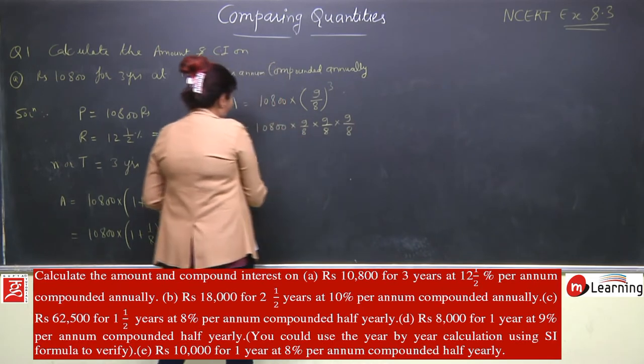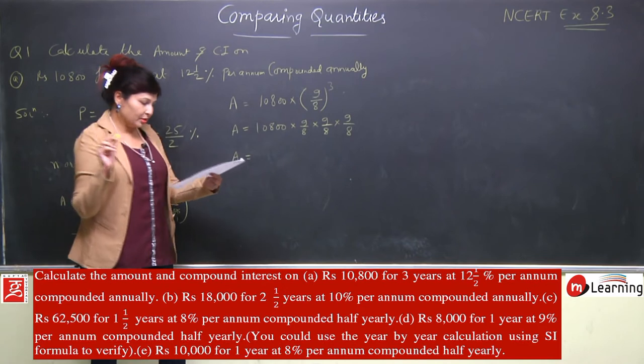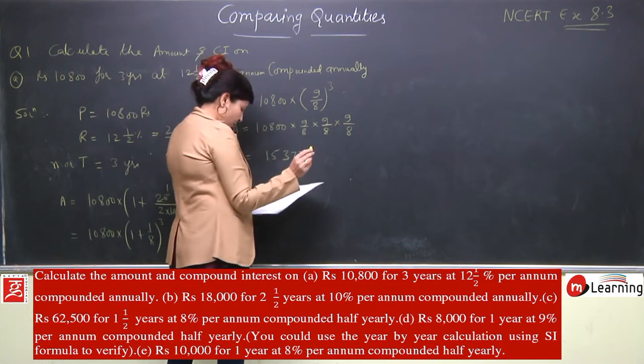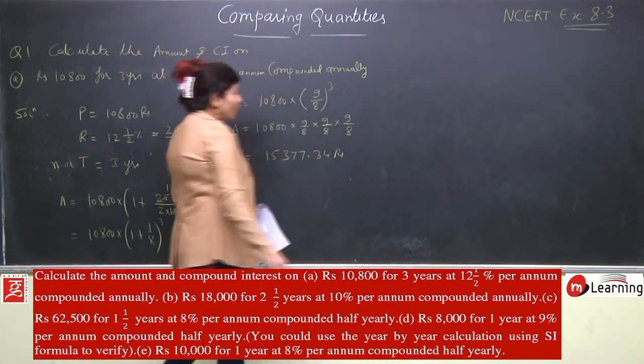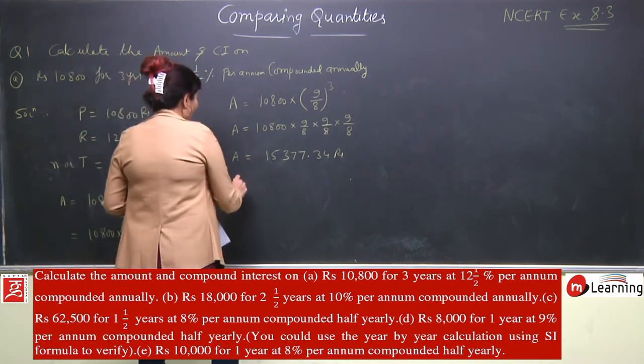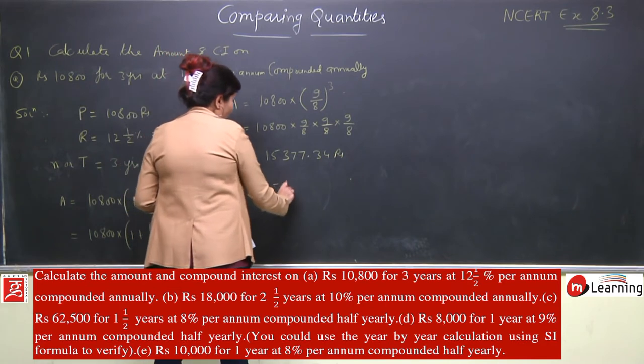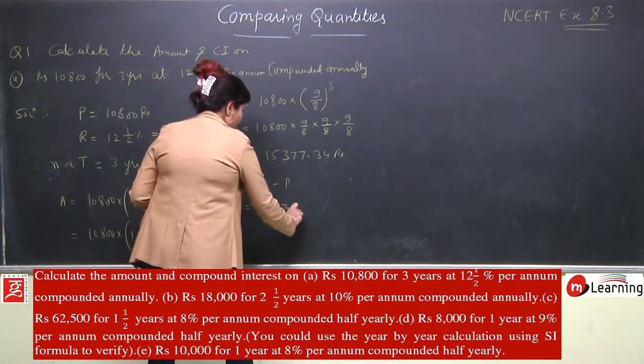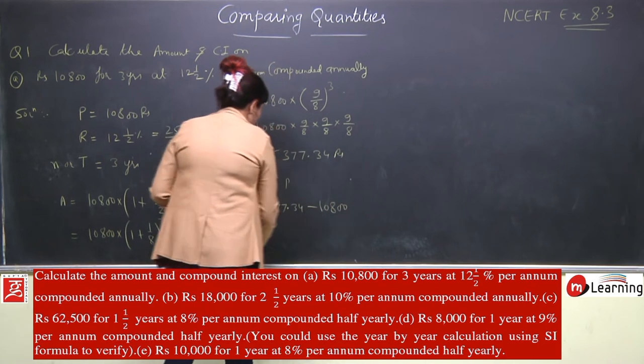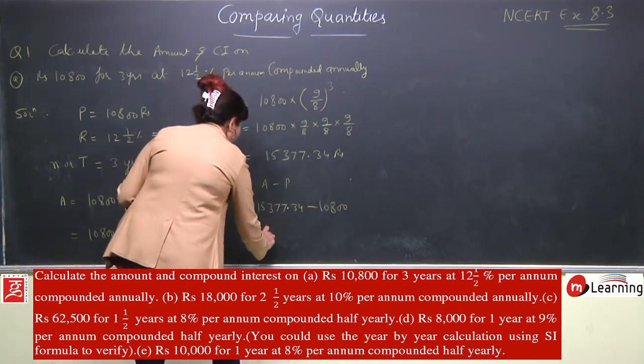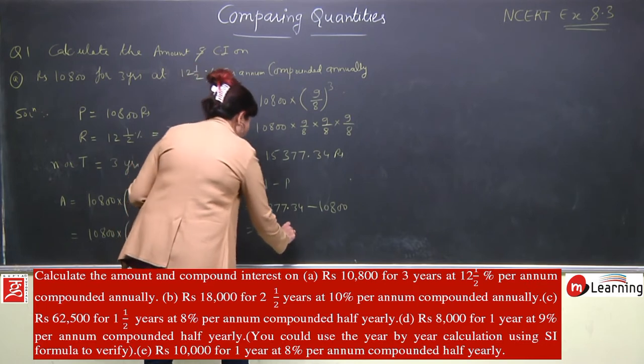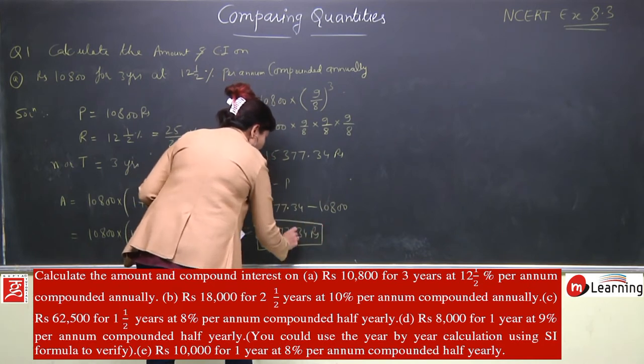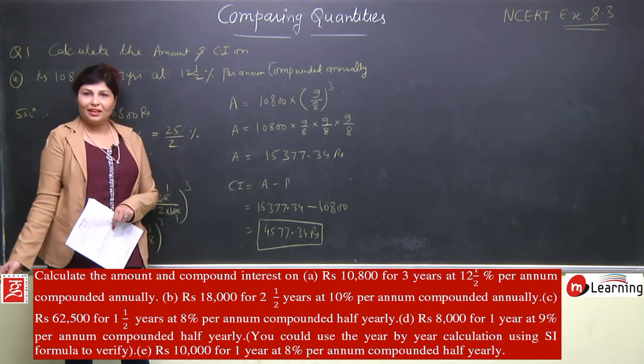After solving, the amount equals Rs 15,337.34. But we need compound interest. CI = Amount - Principal = 15,337.34 - 10,800 = Rs 4,537.34. See, compound interest is always higher, so the answer looks quite handsome.